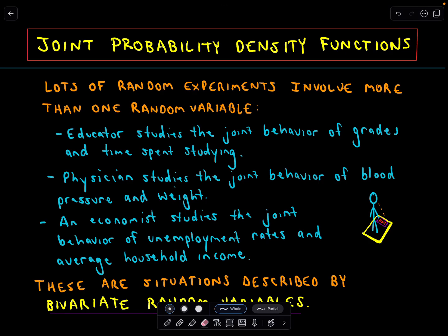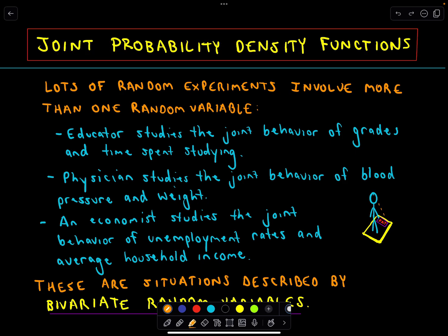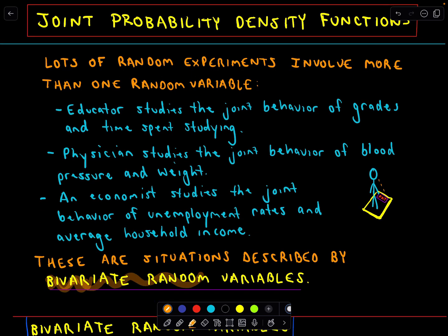In this video, we're going to look at what are known as joint probability density functions. These are very common functions that you'll encounter in a probability or statistics course. Before we talk about joint probability density functions, we're going to talk about what are known as bivariate random variables.